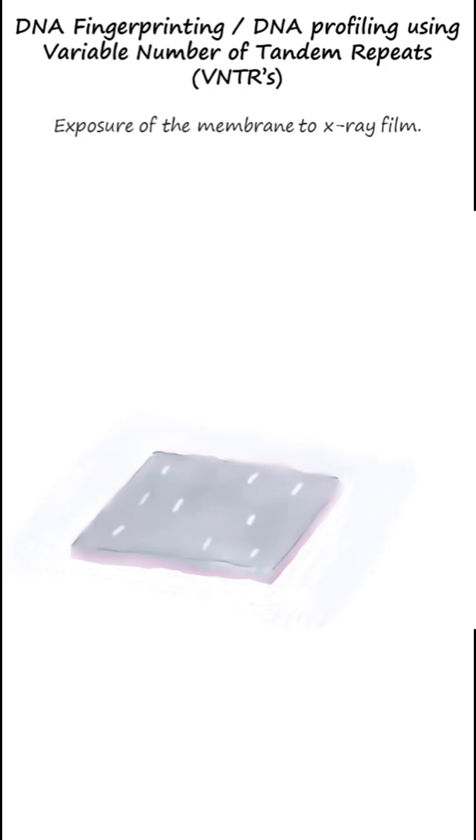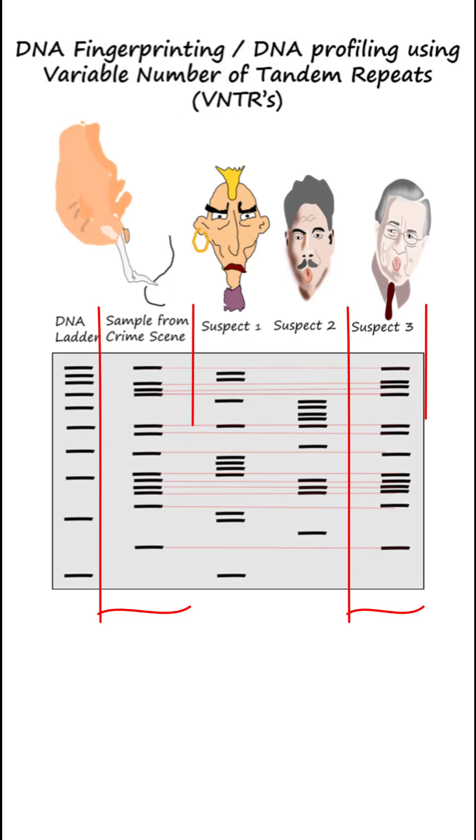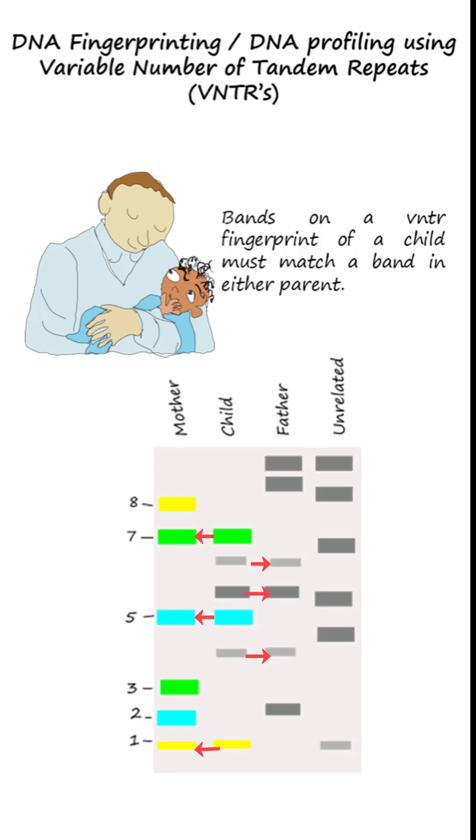Bands appear on the film mirroring where probes bind to DNA fragments. If bands are the same for two samples, the DNA is likely from the same person. Bands on a child's VNTR fingerprint must match a band in either parent.